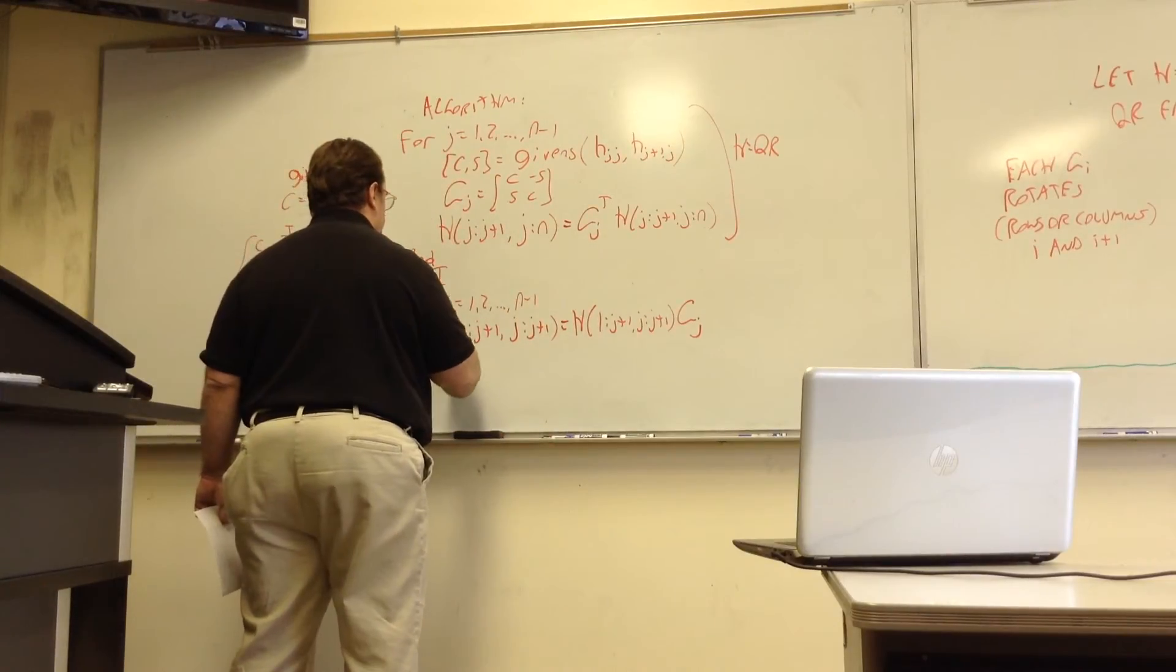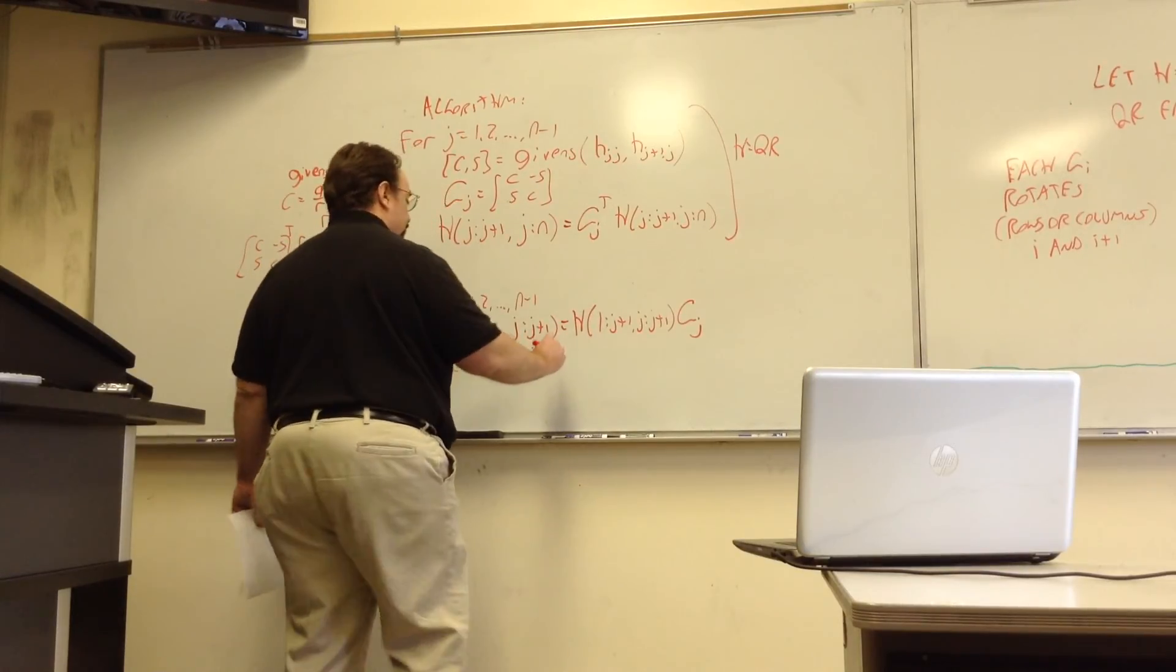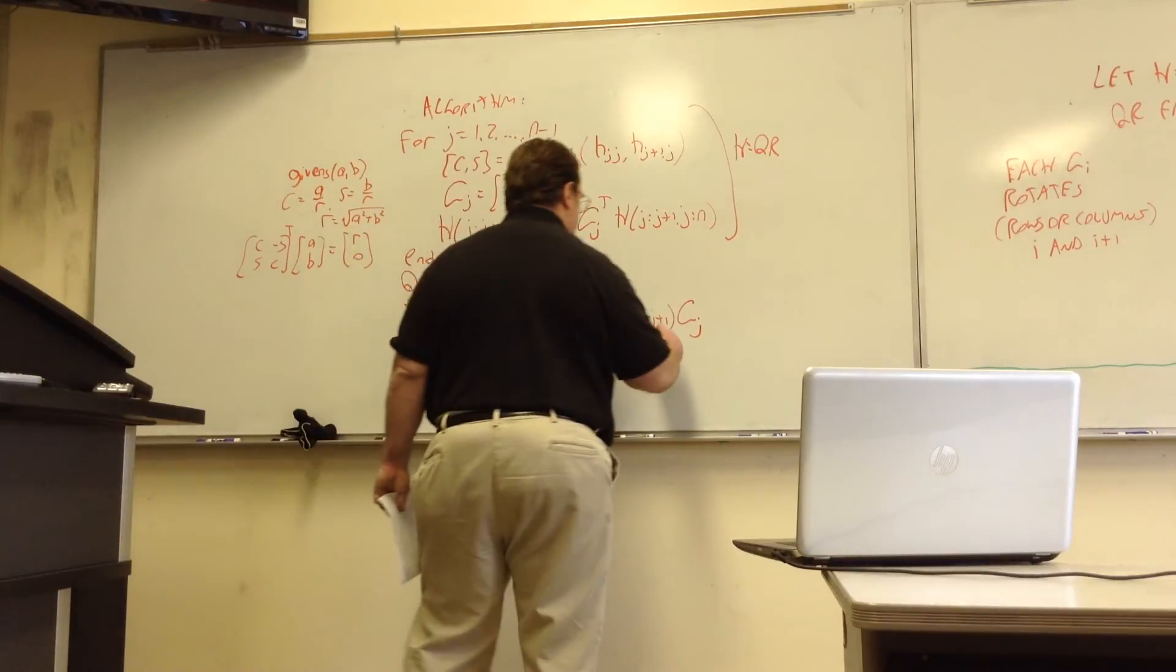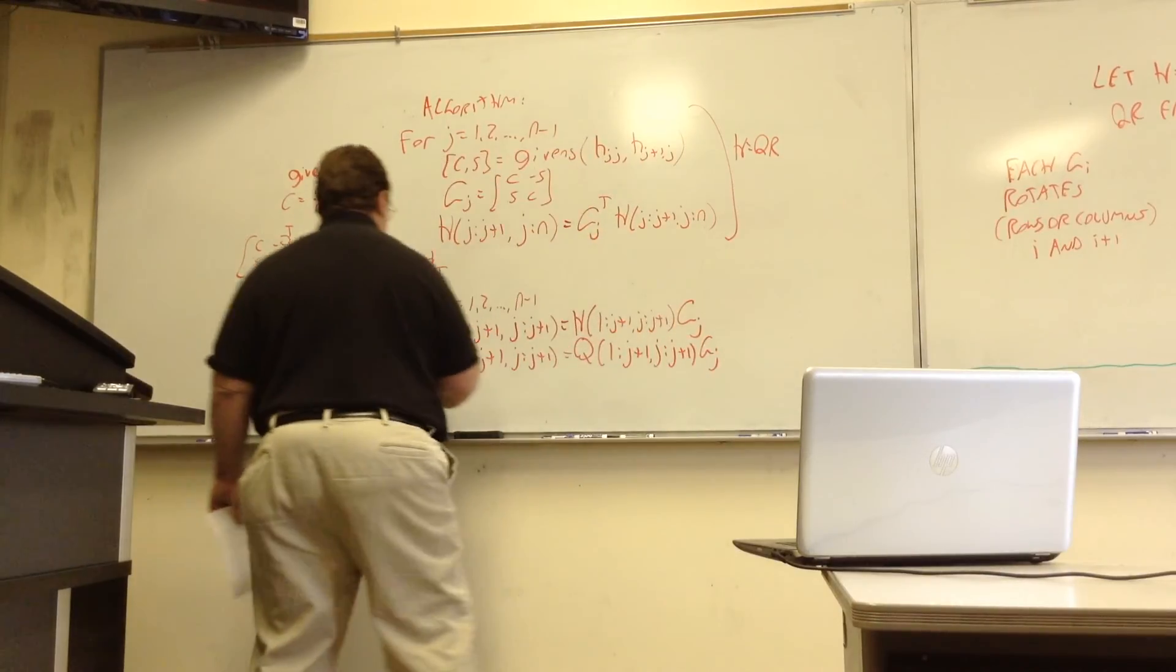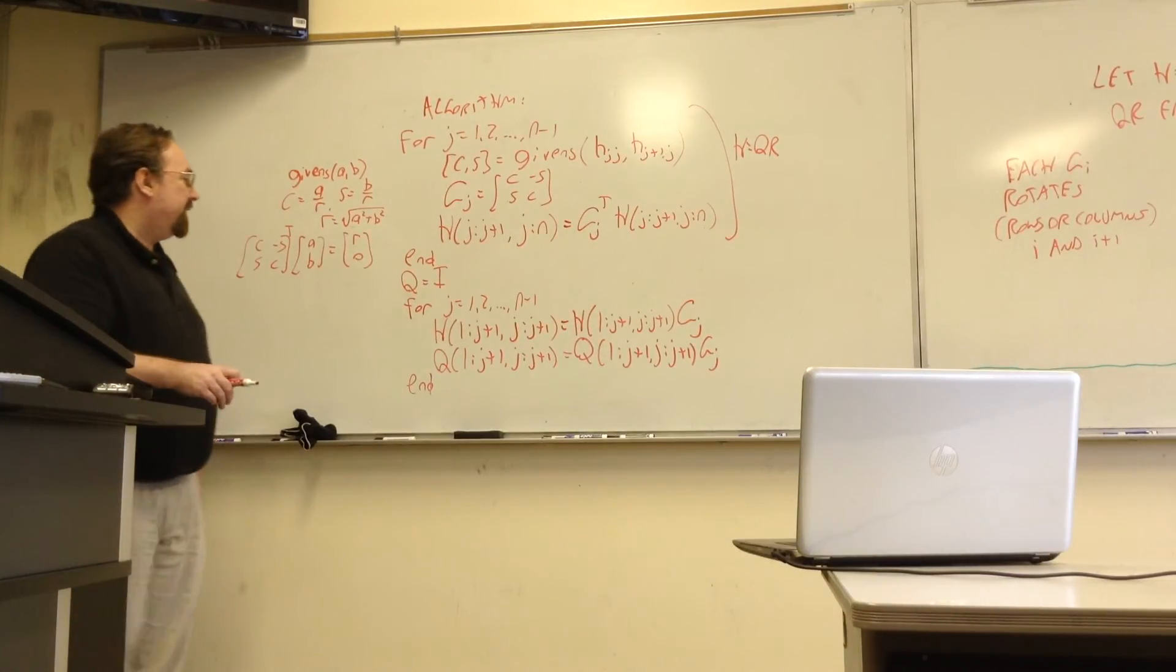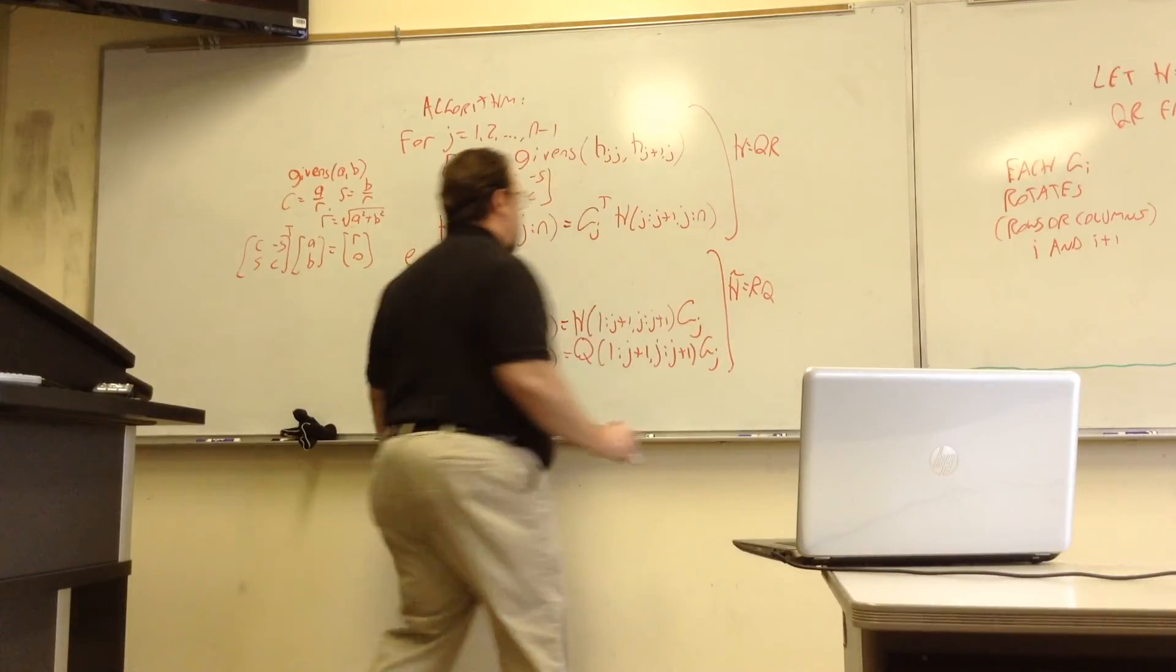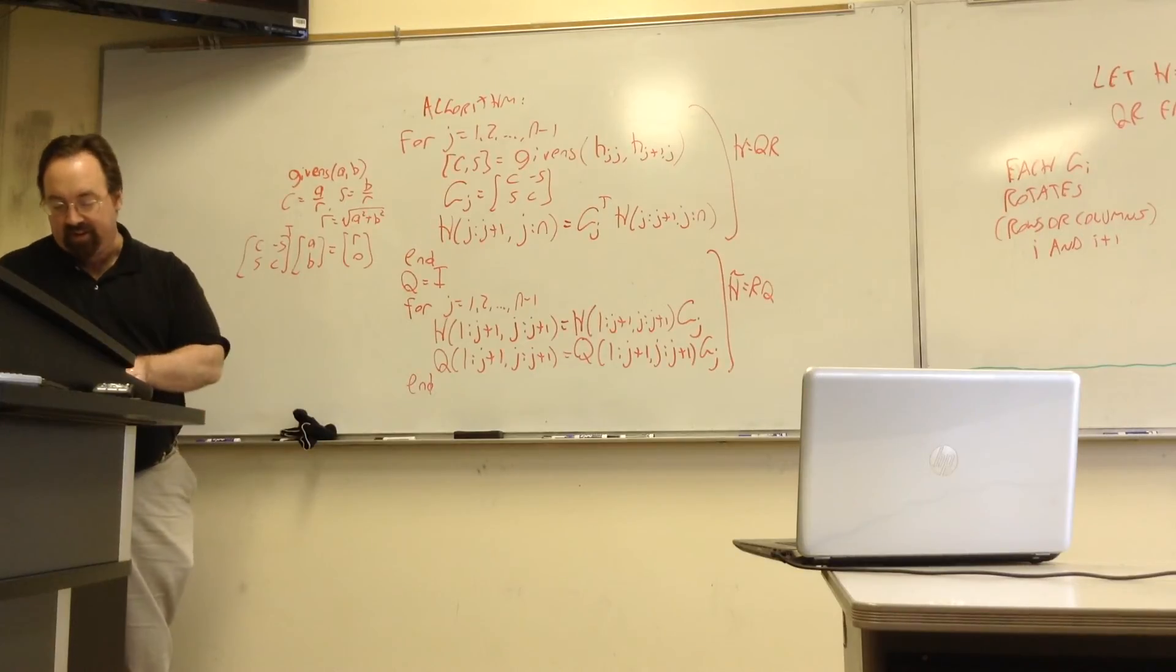So I multiply these columns on the right by the same Givens rotation. And then I do the same thing with Q because I want to accumulate the product of all of those Givens rotations to see, okay, what matrix actually did the similarity transformation. So, in other words, this will give me the whole Schur decomposition eventually. Okay. So that's it. That's the algorithm that does H equal to QR and then H tilde is equal to RQ.